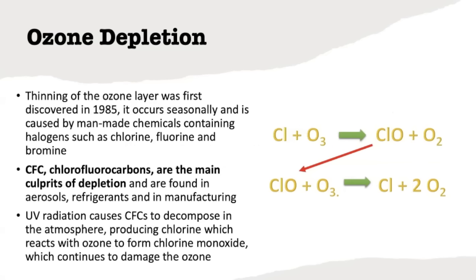The reason we're discussing ozone in general is because ozone depletion is a serious climate change issue. Ozone depletion was first discovered in 1985, and it was discovered because there was basically a hole — a giant hole in our ozone layer, or thinning of ozone — that formed over the Antarctic pole, the south pole of the earth. This thinning occurs seasonally, and it's caused by man-made chemicals. These chemicals are usually from the halogen family, and they include things such as chlorine, fluorine, and bromine.